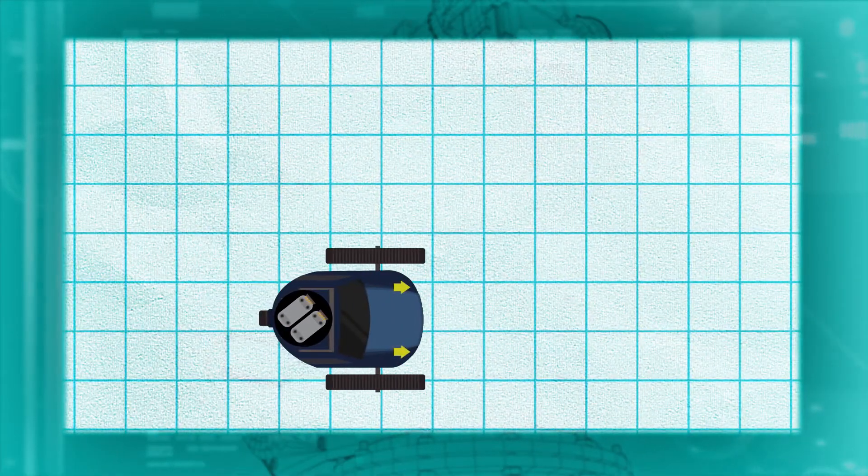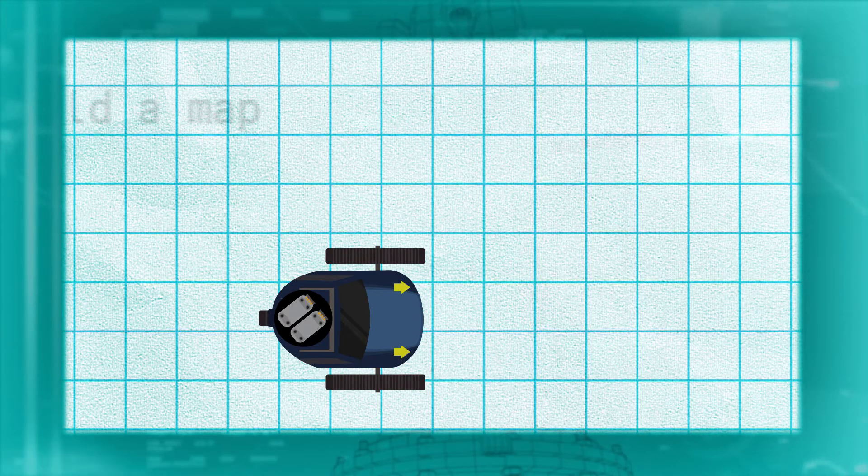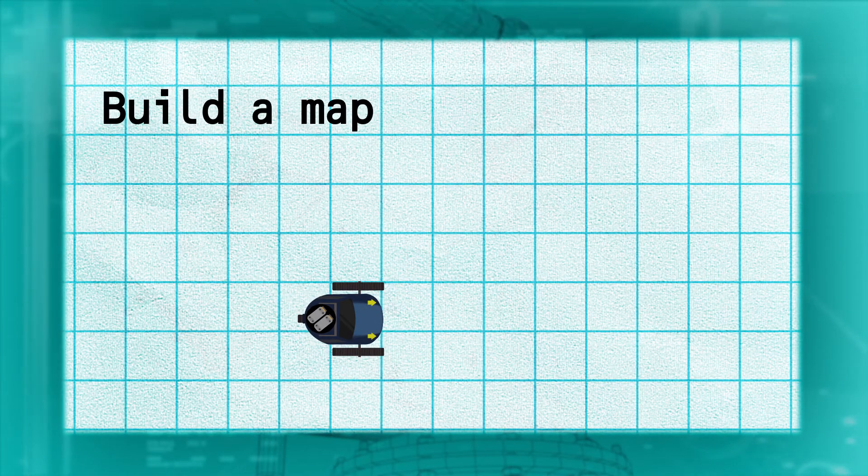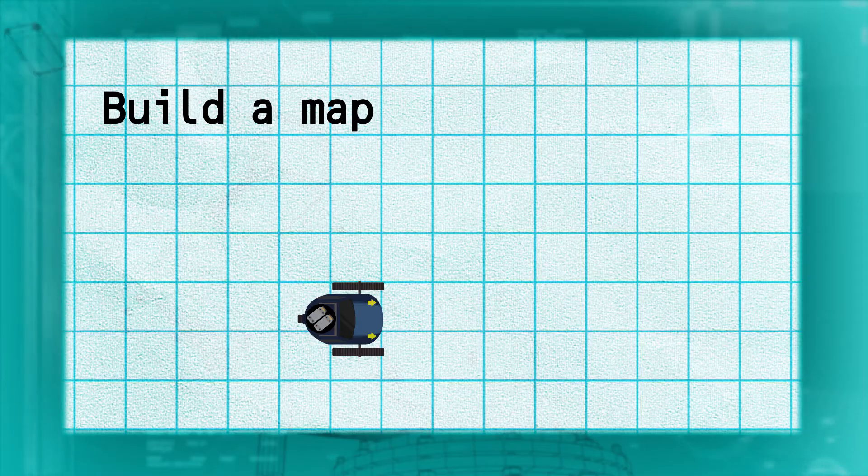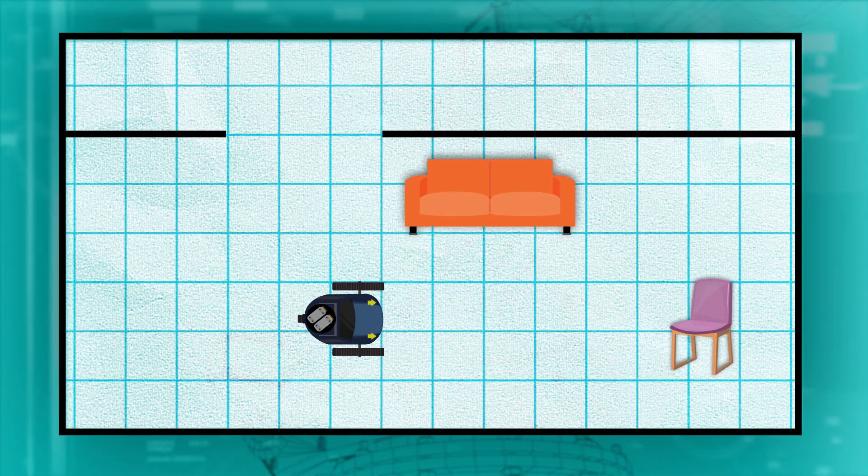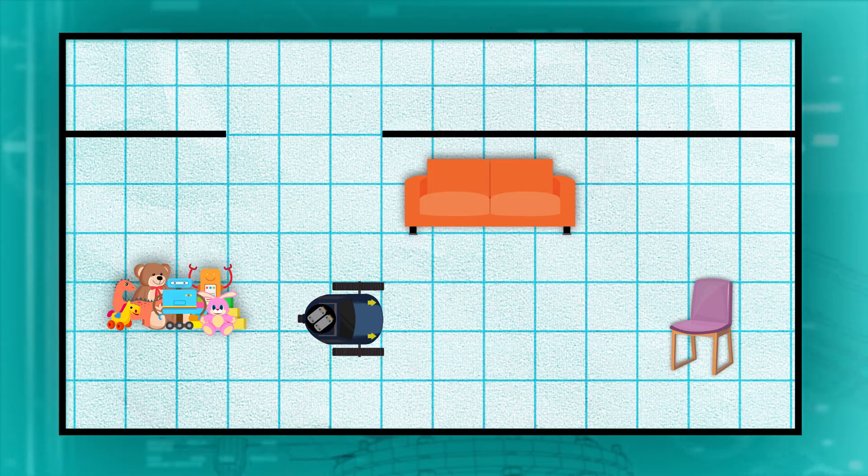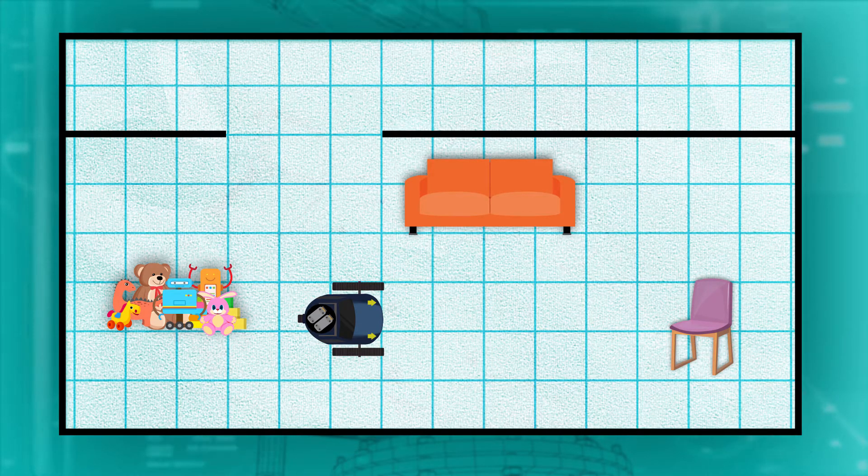One way of keeping track of where things are is probably the method you thought of yourself. The robot should build a map, just like you would do mentally if you were trying to keep your bearings in someone else's house. You would keep track of where the walls, furniture, and other obstacles are located. The robot has a big benefit in this situation, since the LIDAR is very accurate at measuring distances.